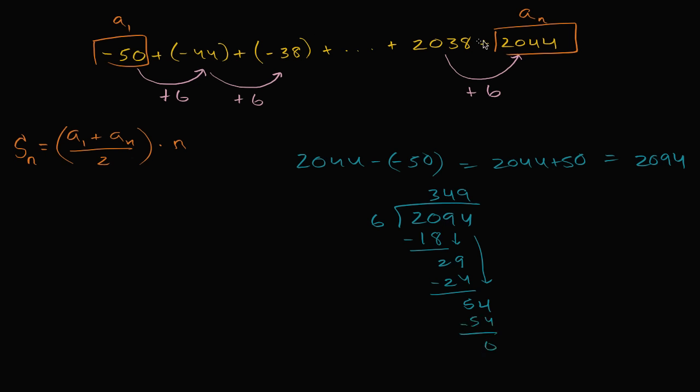So to go from negative 50 to 2044, I have to add six 349 times. So I add it once, I add it twice, and then this right over here, this is the 349th time that I'm adding six. So how many terms do I have? Now you might be tempted to say 349 terms, but really have 349 plus one terms. You have the 349 for every time you added six. So this is the first time you added six, second time you added six, all the way to the 349th time you added six.